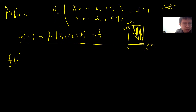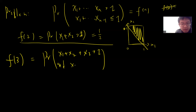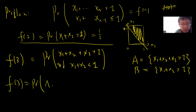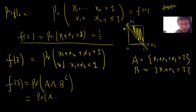Now we compute f(3): the probability that X1+X2+X3 > 1 and X1+X2 ≤ 1. Let me define set A = {X1+X2+X3 > 1} and set B = {X1+X2 > 1}. Then f(3) is basically the probability of A intersected with B-complement.